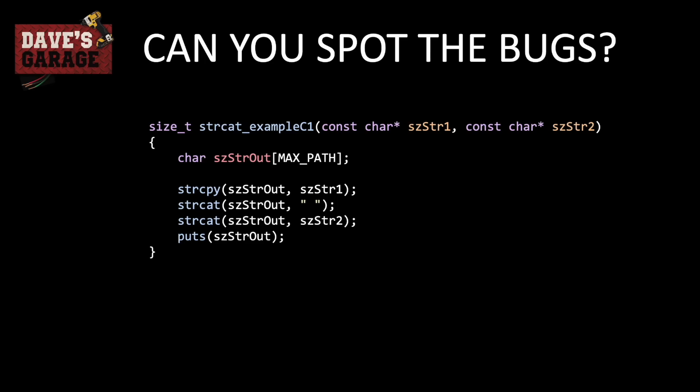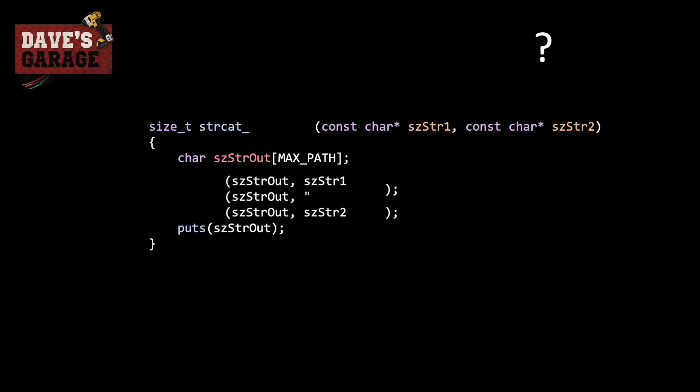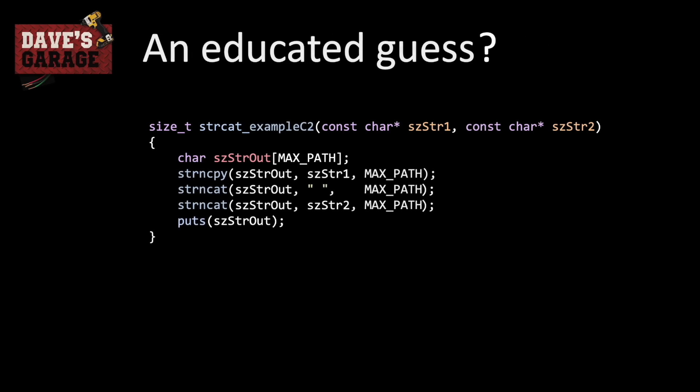How do we solve this? Our first try might be to use something that does respect the buffer's size — strncpy. This function is much the same, but it uses strncpy to copy the first string into the buffer up to maxpath, then uses strncat to add on the space, and strncat again to add on the second string, then outputs it.